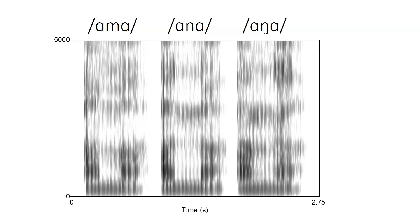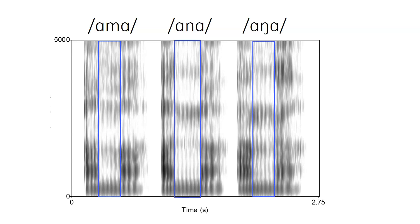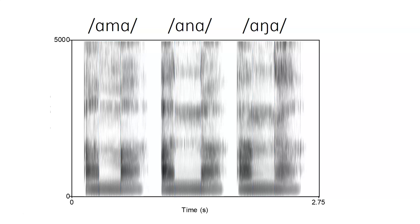Here we have spectrograms of the three different nasals: AMA, ANA, and ANGA. You can see the abrupt drop-off in amplitude as we go from the vowel to the nasal in each case. You can see the relatively low but not very loud first formant inside the nasal in each case. There are some spectral differences between these different nasals, but those differences are fairly minor, and I certainly wouldn't expect anyone to be able to identify which nasal we're dealing with on the basis of the spectrogram of the nasal alone.